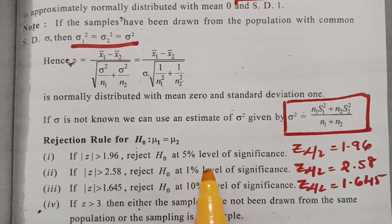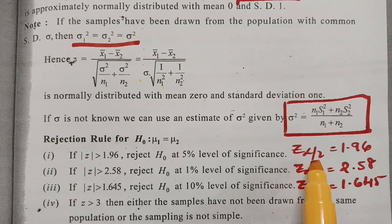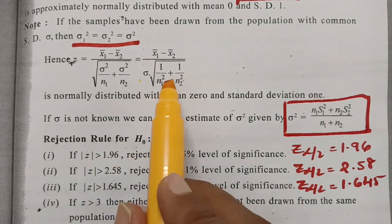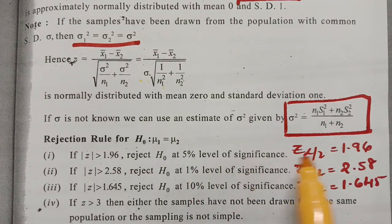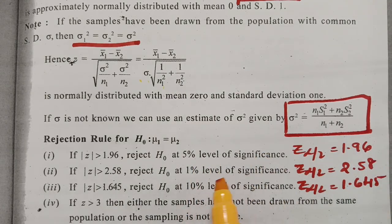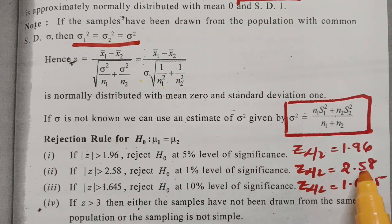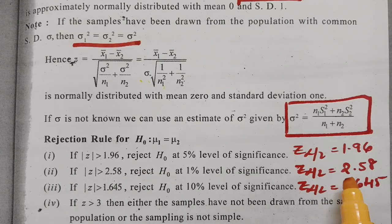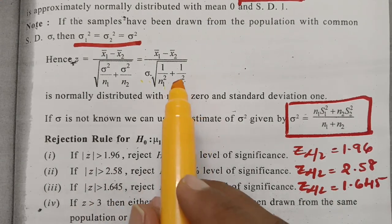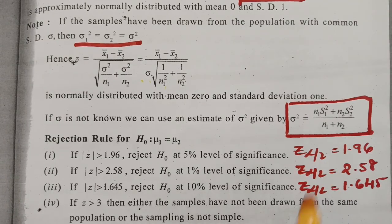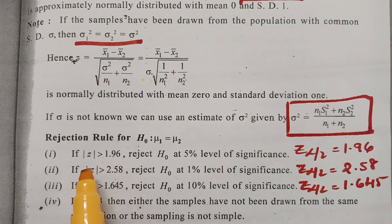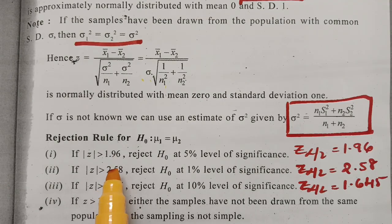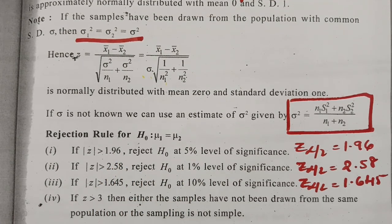For the level of significance, we compare Z alpha by 2 with the calculated value. For 5% level of significance, Z alpha by 2 equals 1.96. For 1% level of significance, Z alpha by 2 equals 2.58. For 10% level of significance, Z alpha by 2 equals 1.645. Please note these values. If the calculated Z is less than Z alpha by 2, we accept the null hypothesis; if Z is greater than Z alpha by 2, we reject it.